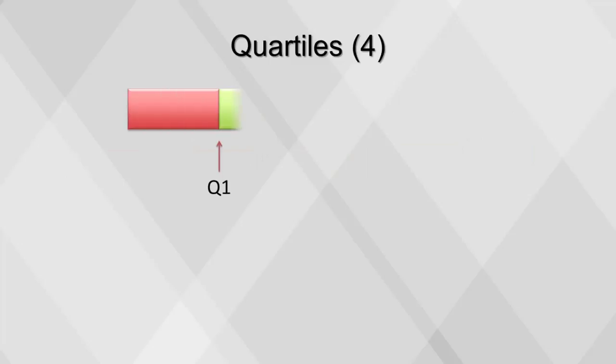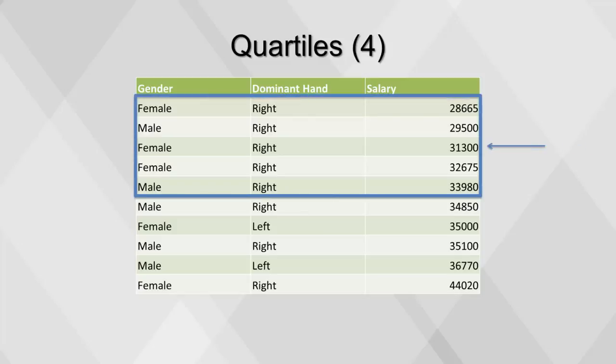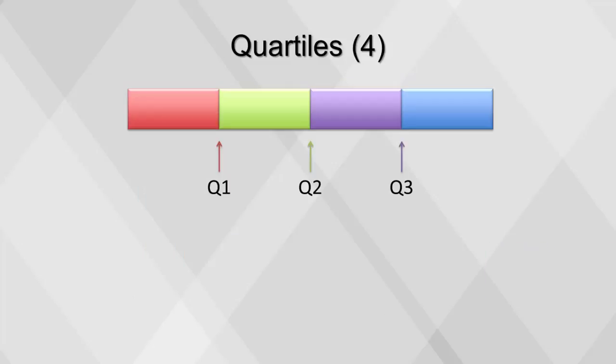The median is commonly referred to as Q2, since it is the second quartile. Q1 and Q3 are also used often. To calculate quartile 1, we can look at the middle value of the first five records sorted in order, which is $31,300, and then look at the middle value of the last five records for quartile 3, which is $35,100. These values, along with our median, are our quartile values.